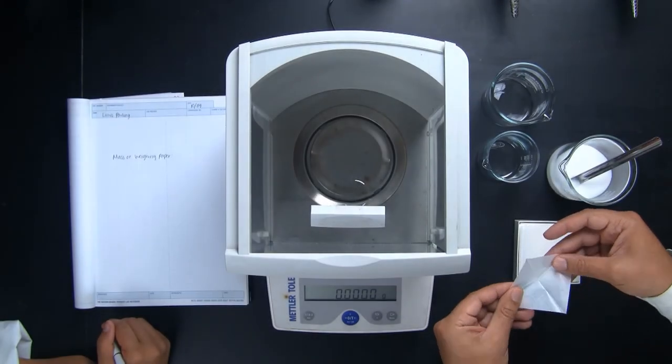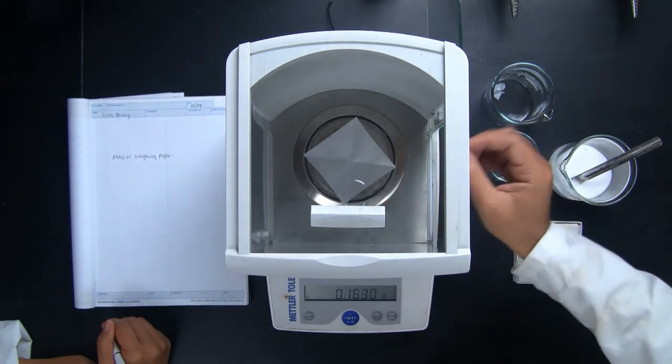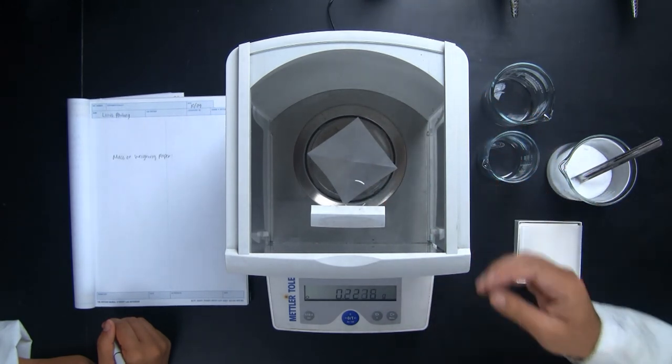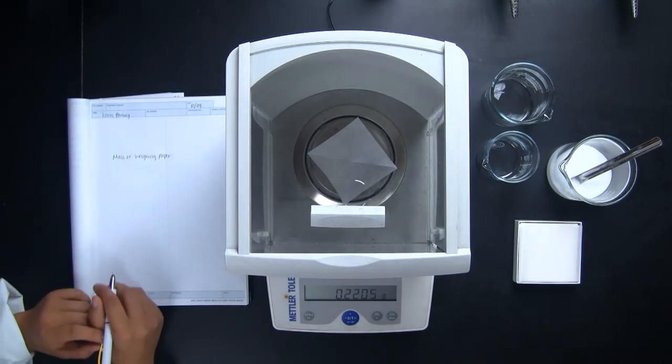To help the reagent stay on the weighing paper, Ash is carefully folding it twice, kind of like a taco, in order to create a pocket for the reagent to stay on the paper and make it easier to manipulate.